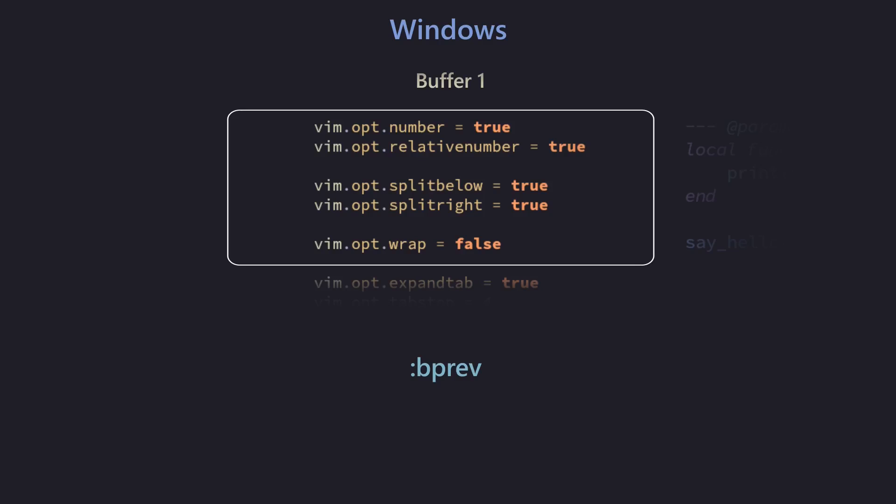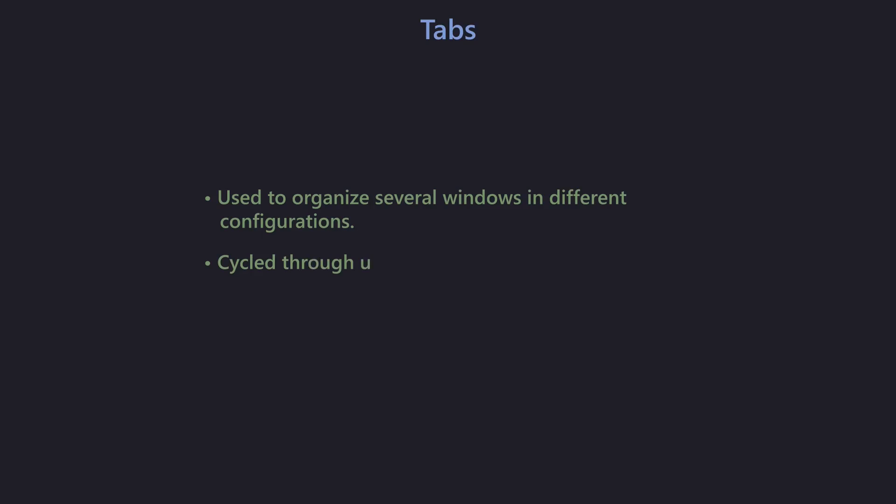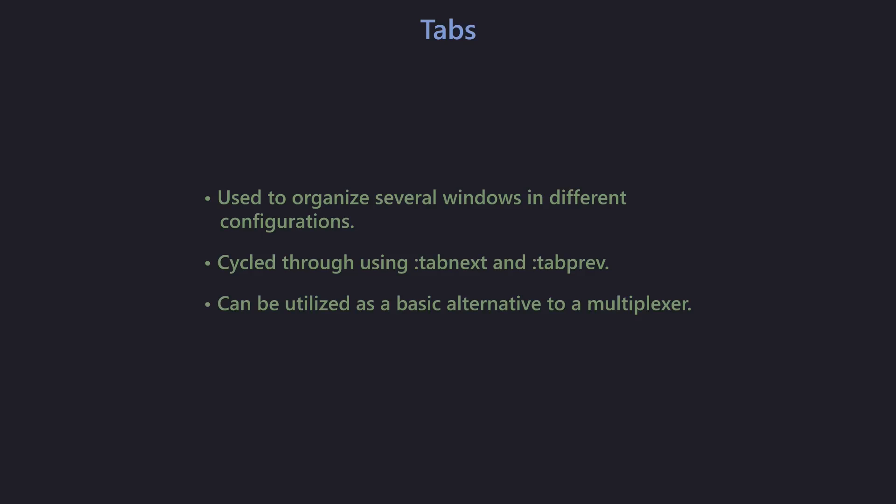During the development of Vim, the developers realized they could do one better, and so they invented tabs — sometimes also referred to as tab pages. Tabs are a container that can contain any amount of windows. So when you create three different windows in a split — two windows in a split and one floating window — all of that is contained within a tab. You can switch between different tabs, allowing you to have many different layouts and configurations of windows.